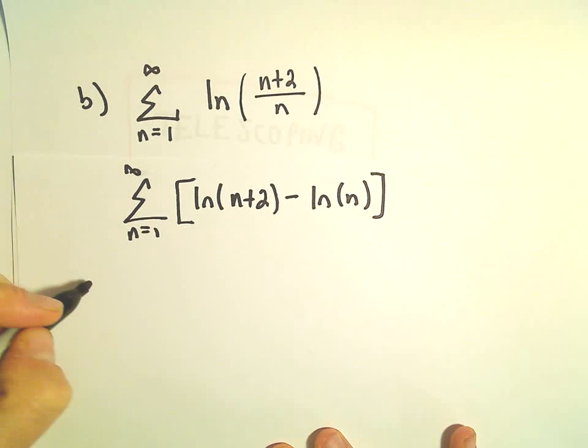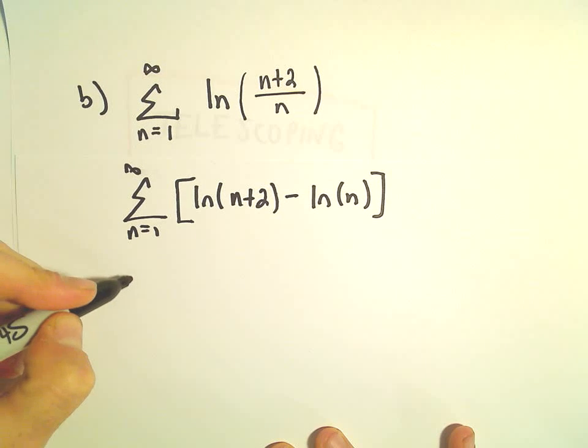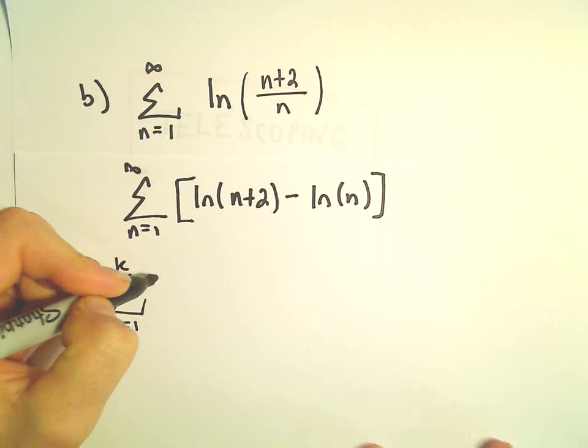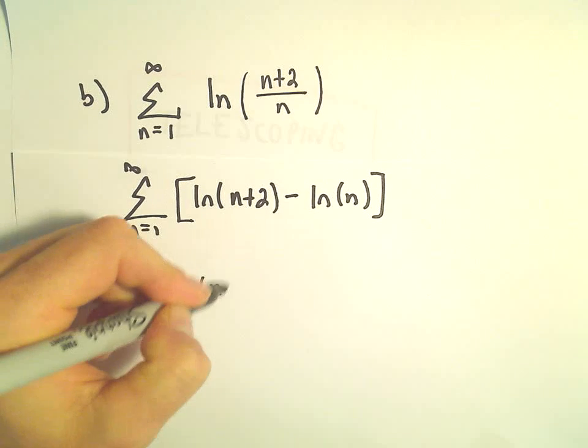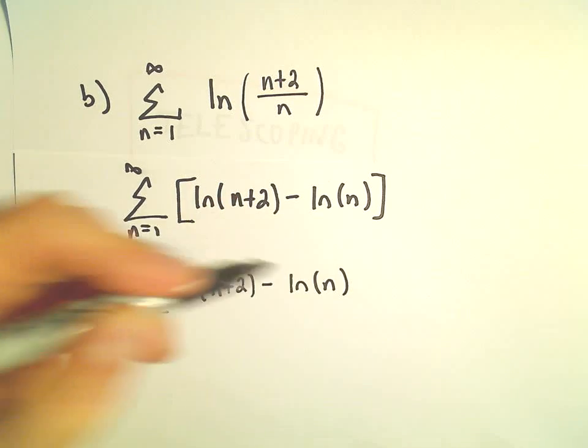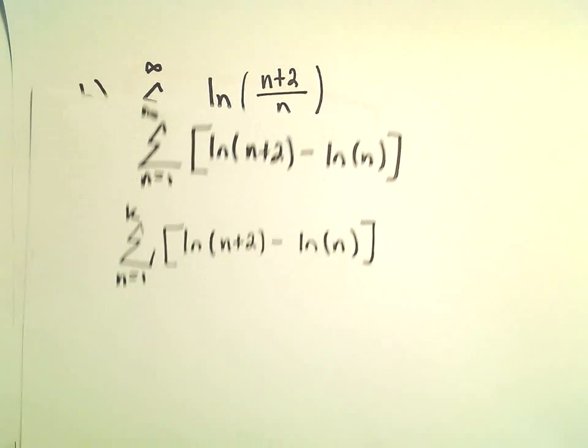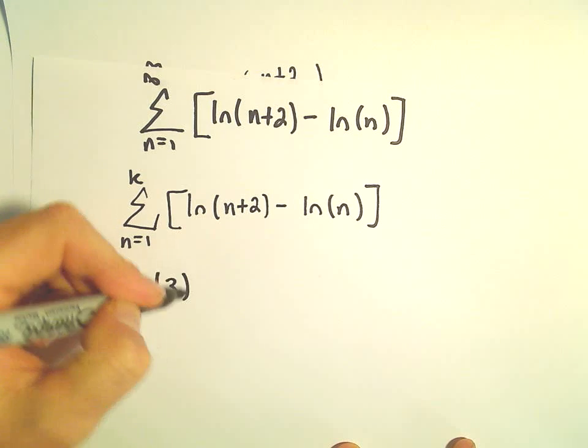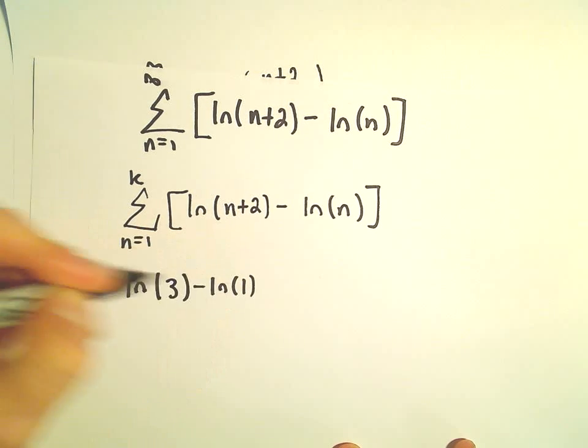So let's think about what would happen if we had just a partial sum. Let's say from n equals 1 up to k of the natural logarithm of n plus 2 minus the natural logarithm of n. Well, we could plug in n equals 1. That would give us the natural logarithm of 3 minus the natural logarithm of 1.